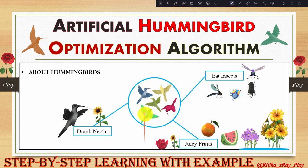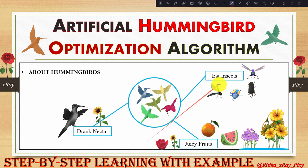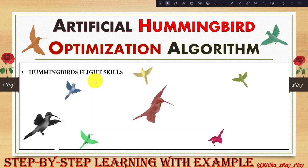Regarding hummingbird diet: hummingbirds like juicy fruits and drink nectar found in flowers by moving their tongue in and out. They also eat insects to add proteins and minerals to their diet. This algorithm is inspired by the hummingbird's flight skills and foraging strategies.